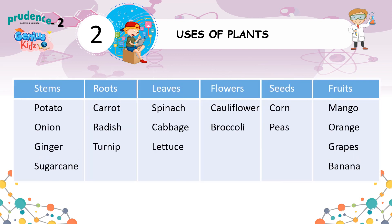Different plant parts include stems, roots, leaves, flowers, seeds, and fruits. Examples of plant foods include potato, carrot, spinach, cauliflower, corn, mango, onion, radish, cabbage, broccoli, peas, orange, ginger, turnip, lettuce, grapes, sugarcane, and banana.